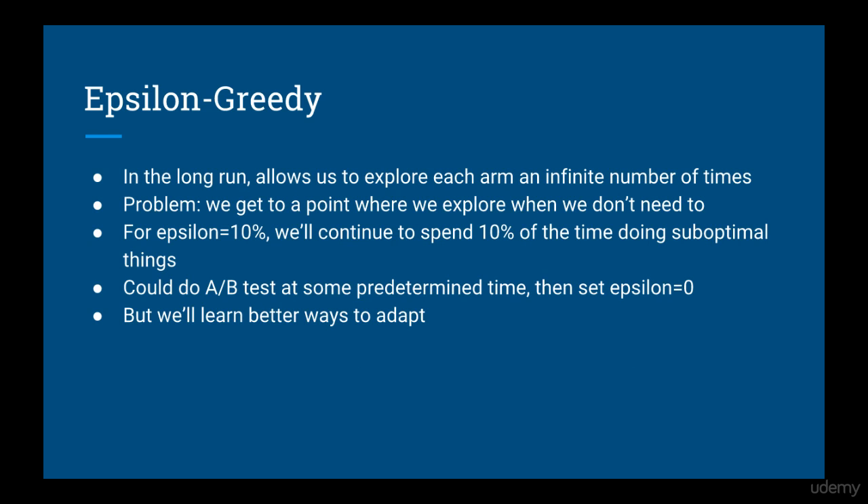An A/B test could be useful here, where you could do a test at a predetermined time to check for statistical significance. If you find statistical significance, you could set epsilon to 0, and effectively you're only doing the greedy part.